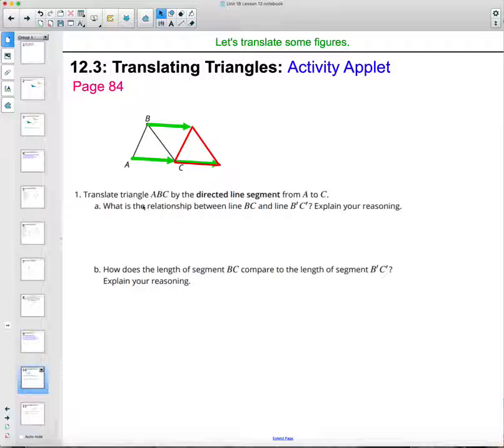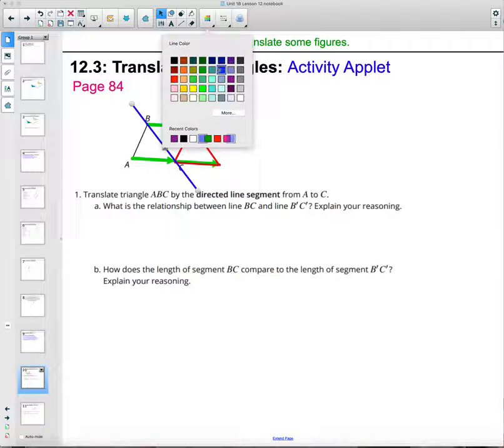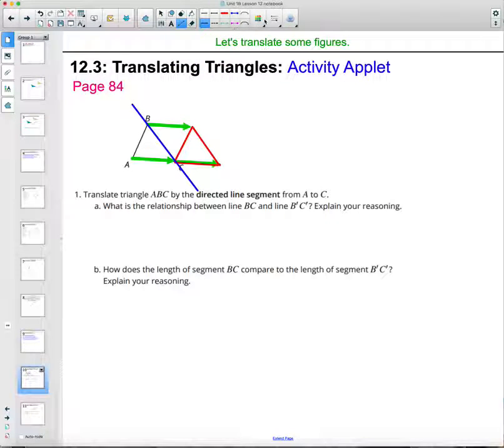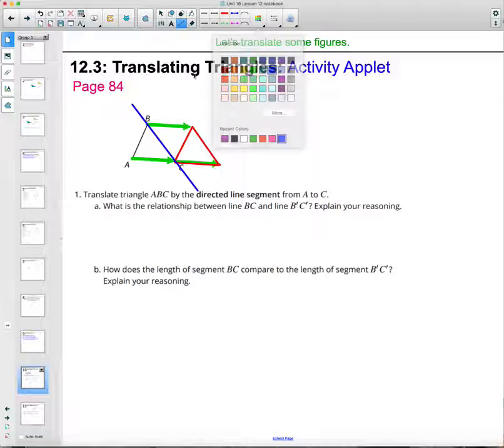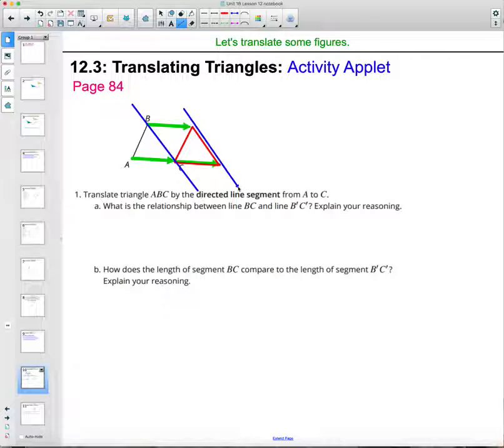And then what's the relationship between lines BC and B prime C prime? So this line here, BC, compared to this line B prime C prime. So what's the relationship between those two blue lines? So parallel. So translation moves parallel to itself.